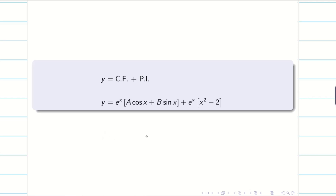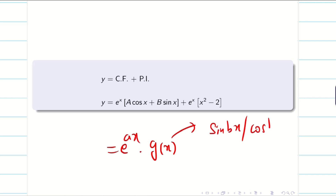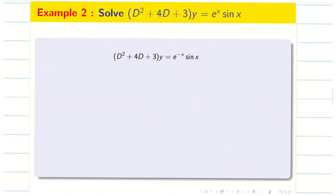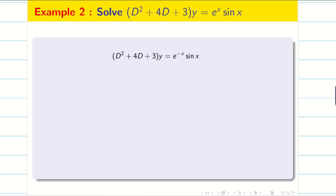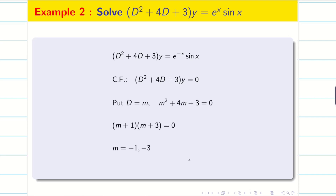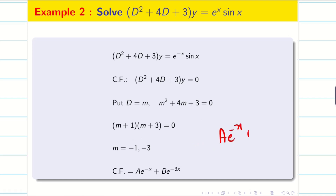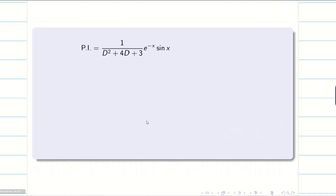Now let us look at one more problem where g(x) is sin(bx) or cos(bx). The problem is: (d² + 4d + 3)y = e^(−x)·sin x. As usual, we find the CF by making the RHS homogeneous and putting d = m for the auxiliary equation. The roots are −1 and −3. Therefore the CF is A·e^(−x) + B·e^(−3x).